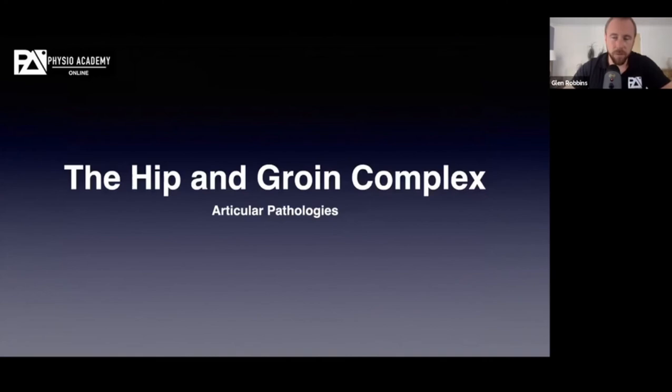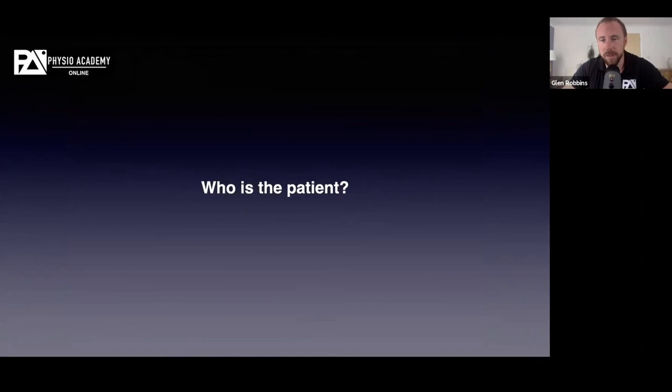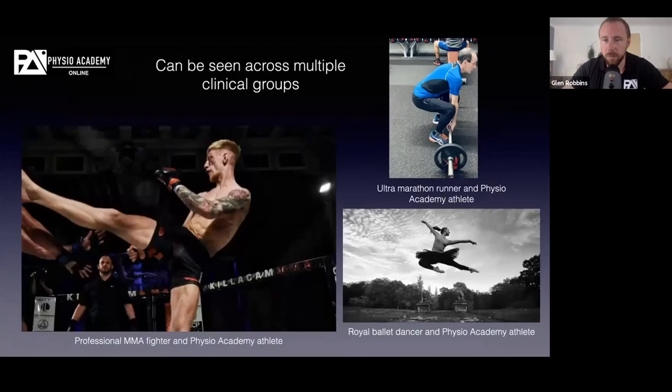The first talk today looks at the hip and groin complex, focusing on articular pathology. Module two will cover extra-articular issues. First, we should ascertain who the patient is that we're talking about — we're definitely not talking about hip replacements in older adults. We're looking at younger hips, around 16 to 45 years old.